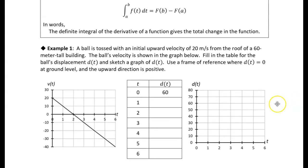So let's take a look at this first example. This is a physics problem. In physics, you'll learn lots of formulas for equations of motion — this is going to show you where those formulas came from. We're going to do this without any formulas; we're just going to do this graphically and numerically using the concept of the fundamental theorem of calculus. In this problem, we have a ball that's tossed with an initial upward velocity of 20 meters per second, and we're up on top of a 60-meter tall building, tossing it straight up.